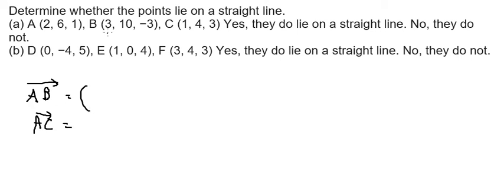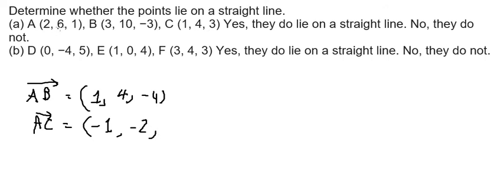So we have 3 minus 2, you get 1; 10 minus 6, you get 4; negative 3 minus 1, you get negative 4; 1 minus 2, you get negative 1; 4 minus 6, you get negative 2; and 3 minus 1, you get 2. Now we need to look at the ratios.